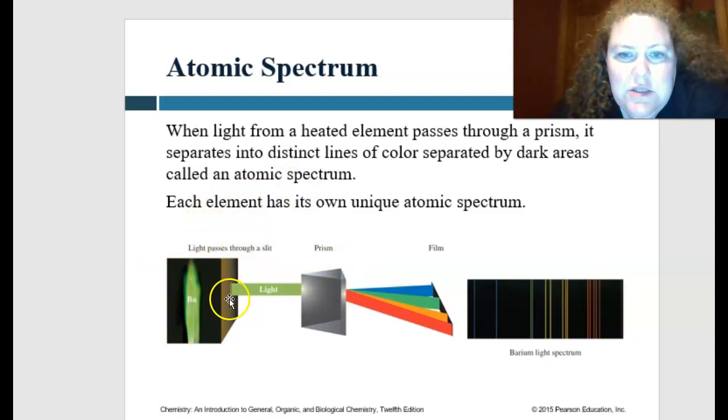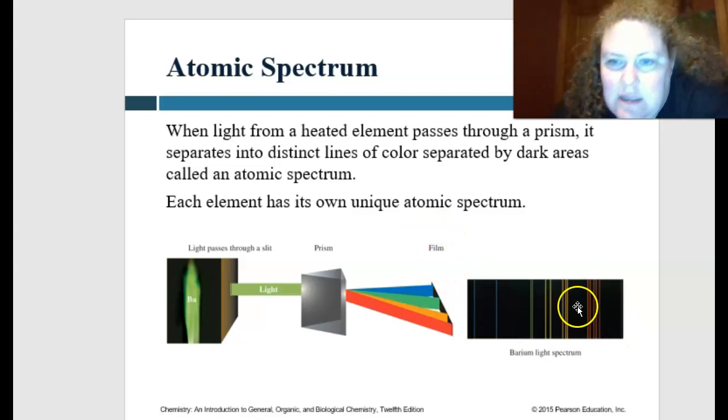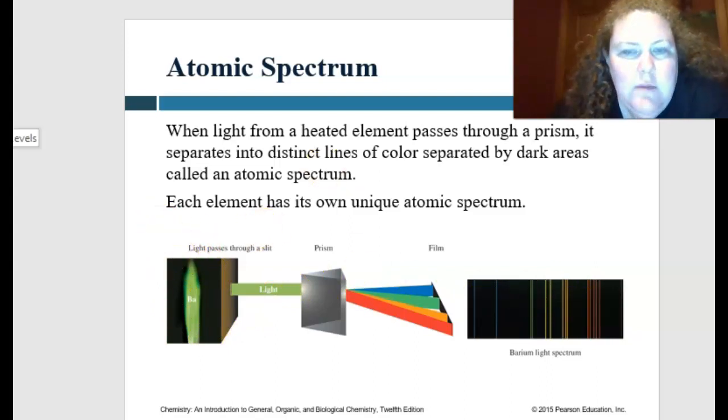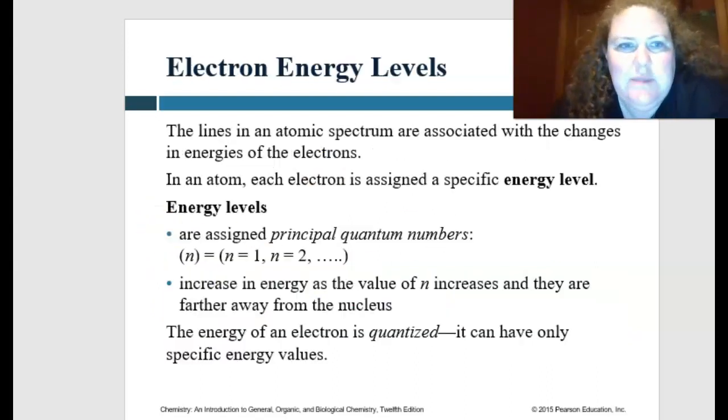Just remember that when light passes through a very small slit and gets passed through a prism, then it's going to separate out. It's going to be exposed on a film. And then this is a barium light spectrum that you can see from this barium sample that's being passed through the prism. This is part of understanding what the atomic spectrum is.